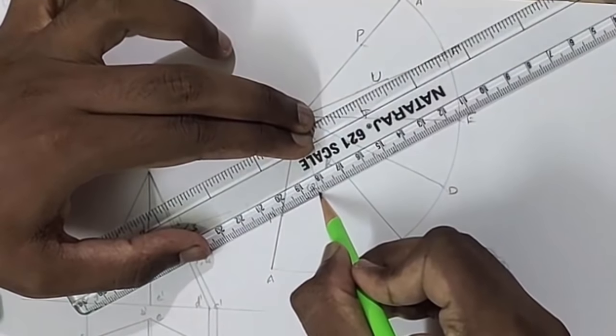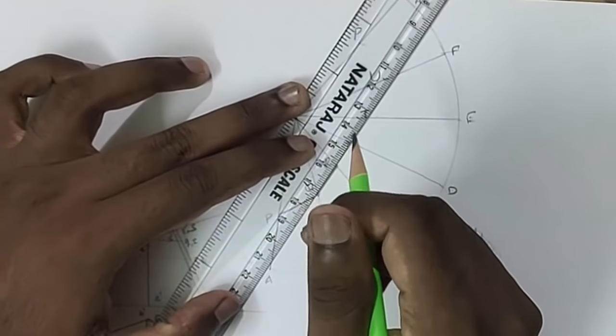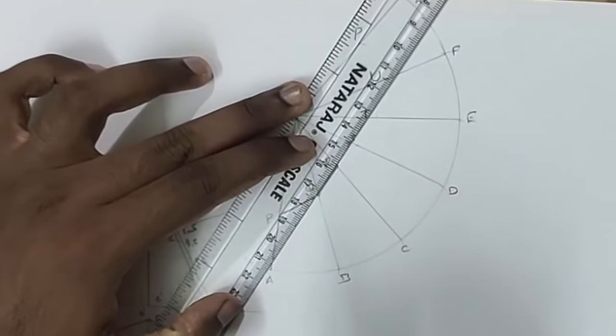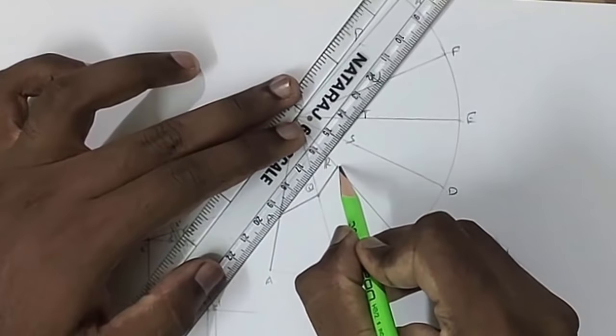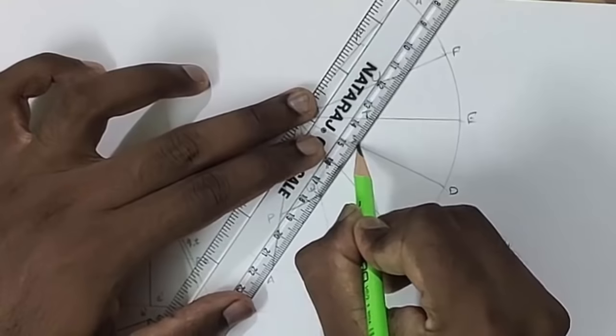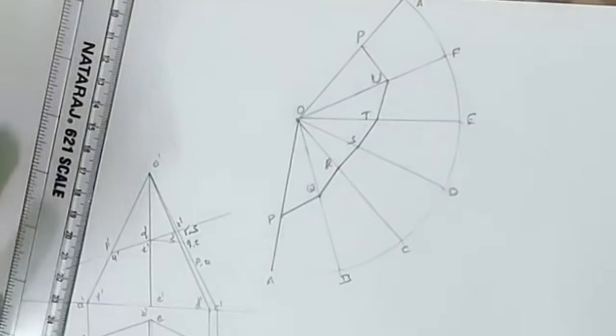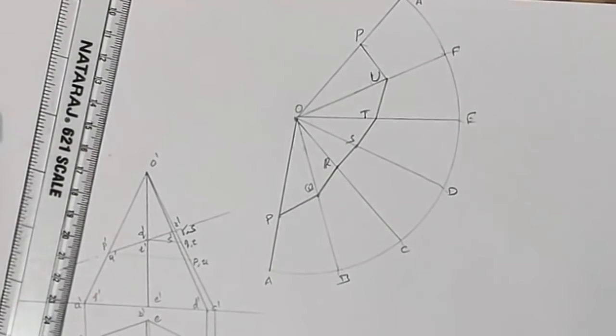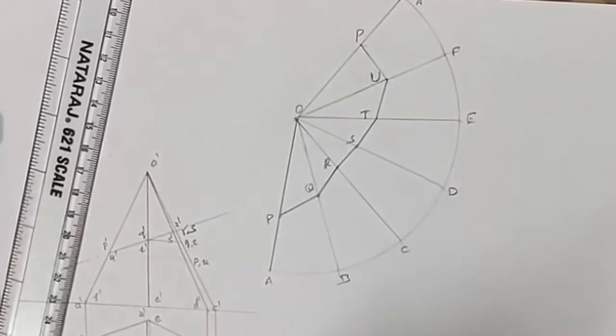If it is a cylinder or cone, we have to connect using smooth lines. If it is a pyramid or prism, we have to connect using straight lines.